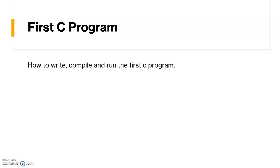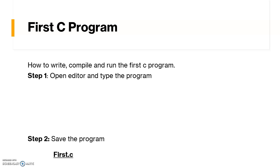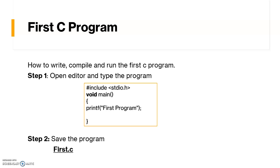We need to follow some steps to compile and run our program. The first step is to open the editor, type the program, and then save it. For our reference, as our first program, I'll be saving this program as first.c. Don't get confused about all these statements — I'll explain everything in the next video.